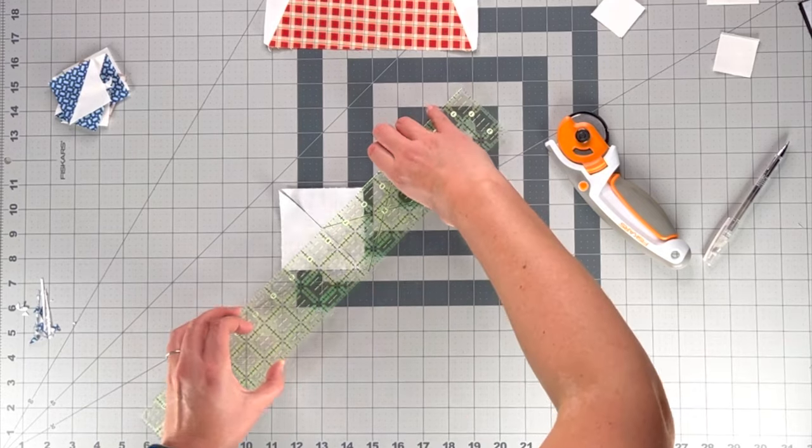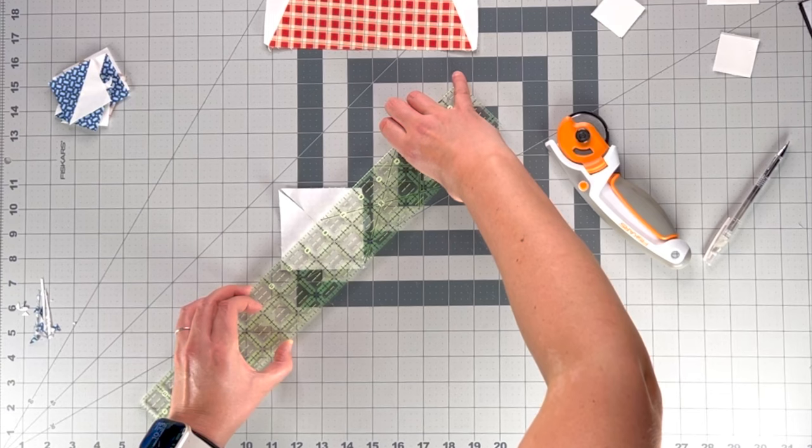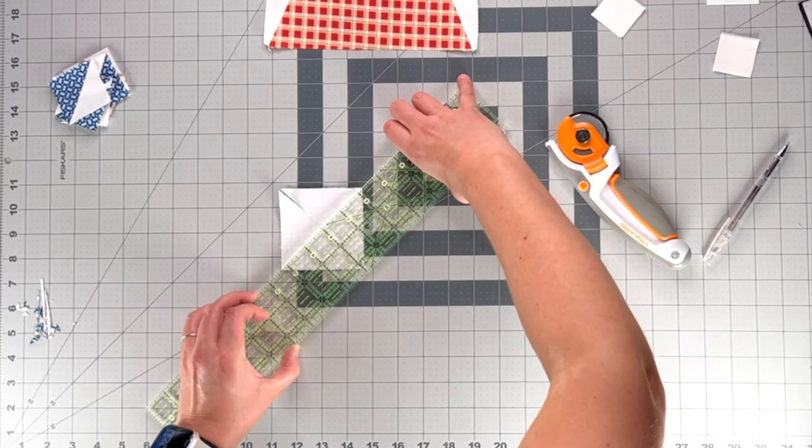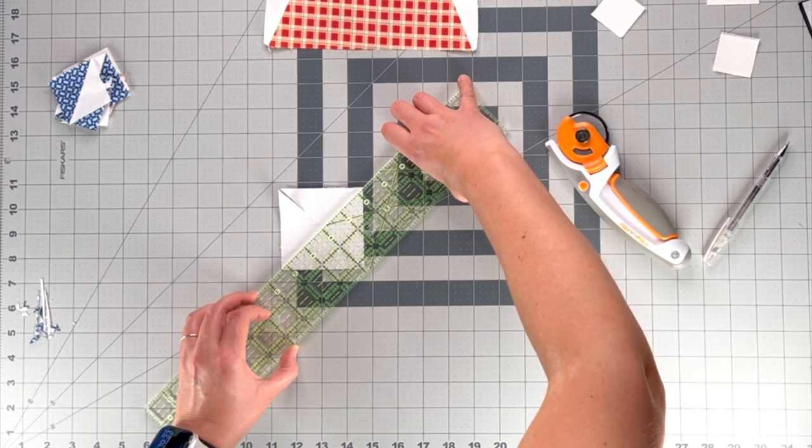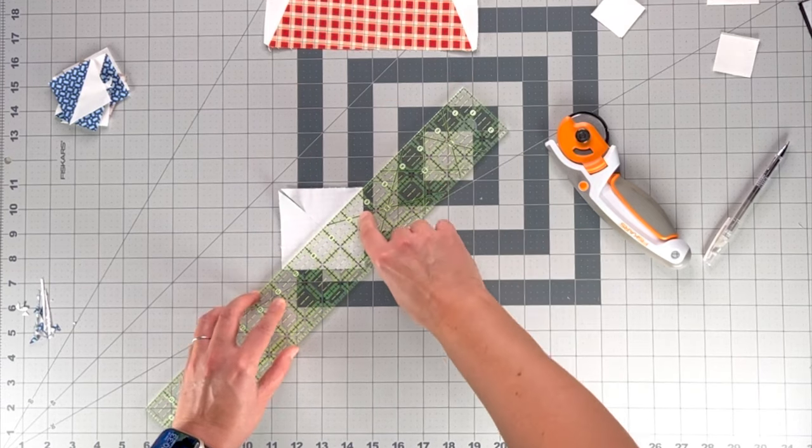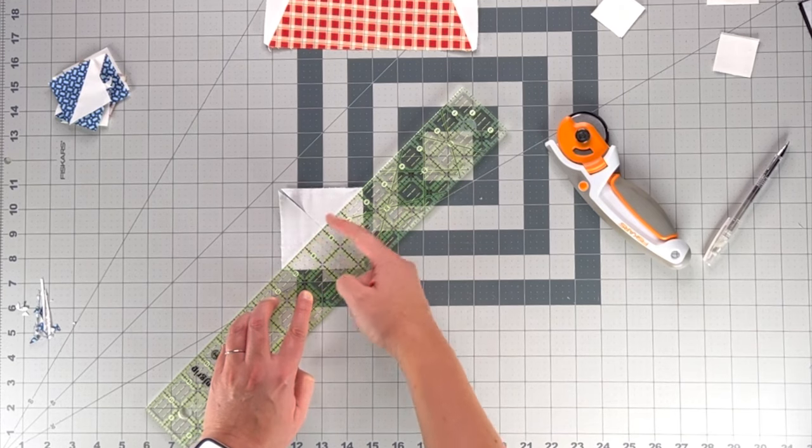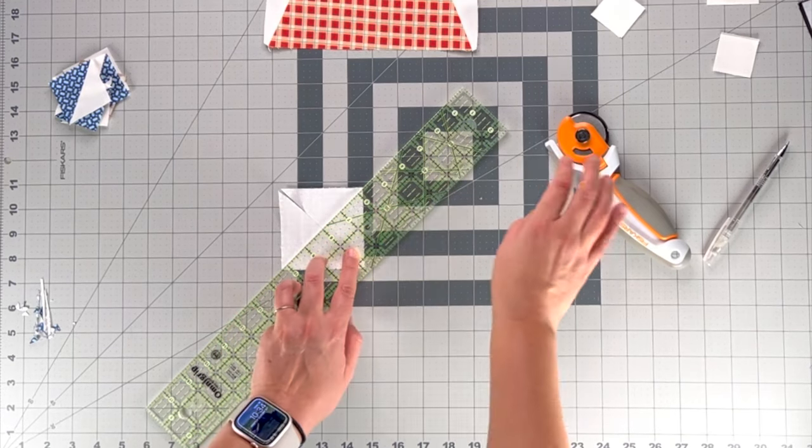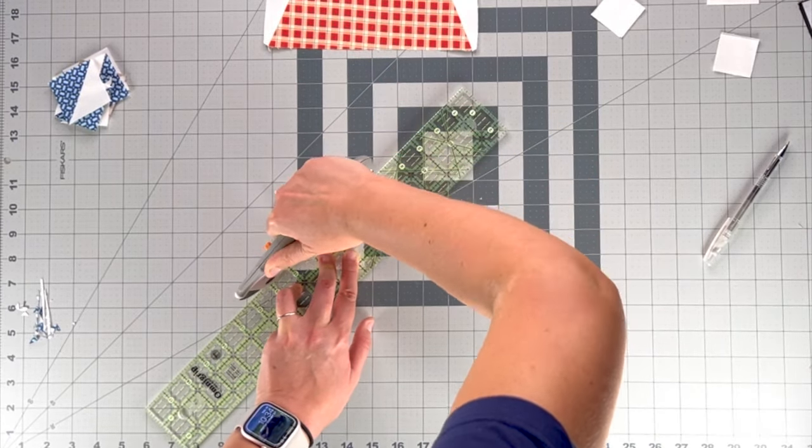And if you want to line up, like sometimes it'll get a little off kilter. Or if you want to line up one of the lines on your ruler as well along this cut you just made, that makes it a little bit more. See how the cut is lined up along this line, and then I've got each point on the edges. And then we're just going to cut it that way.